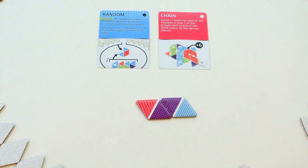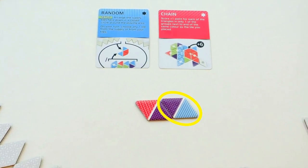Remember, you never count the tile you placed. The tile placed has a purple triangle and it was placed next to one purple triangle. Therefore they score one point.